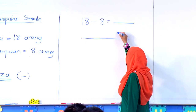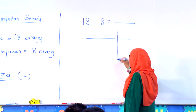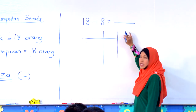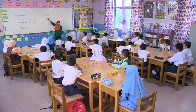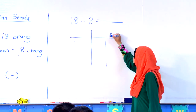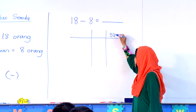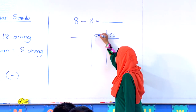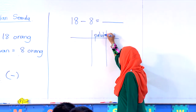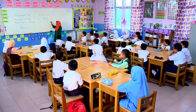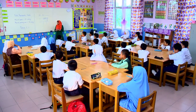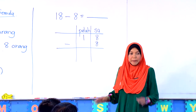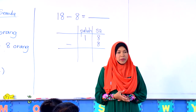Kita bahagikan kepada berapa bahagian. Di sini kita nak letak apa? Sa. Yang ini? Puluh. Kita tuliskan kepada puluh. Dari sini, kita menggunakan jari kita untuk mendapat jawapan yang lebih tepat.